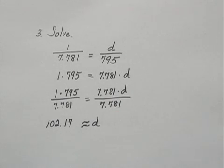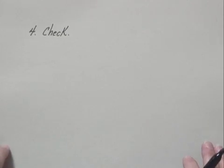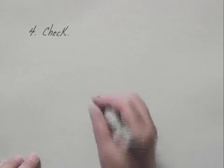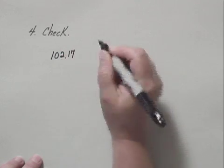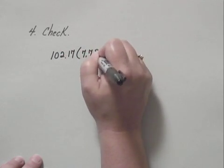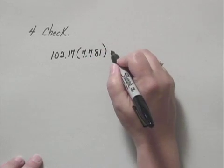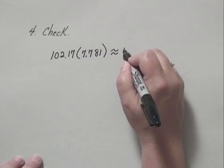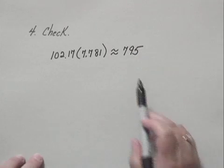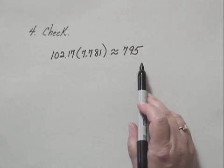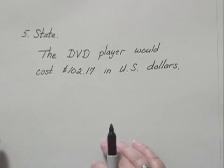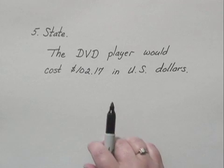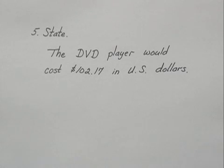To check our answer, we use a slightly different approach. Since 1 dollar is worth 7.781 Hong Kong dollars, we take our U.S. dollar answer of 102.17 and multiply by 7.781, which equals approximately 795 Hong Kong dollars — the original price. The answer checks. The DVD player would cost $102.17 in U.S. dollars.